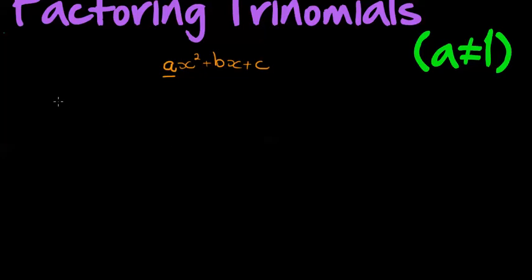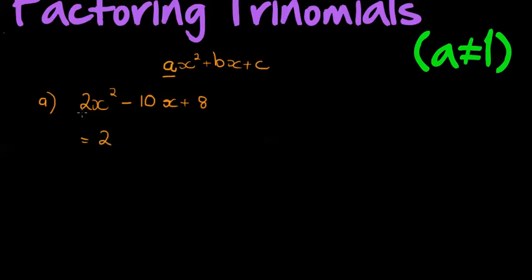Let's do one example: take 2x squared minus 10x plus 8. Notice that in this case I have a leading coefficient that's not equal to 1, but actually it can simplify to that by taking out 2 as a common factor, because 2 can divide into 10 and into 8. This becomes 2 times (x squared minus 5x plus 4).